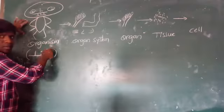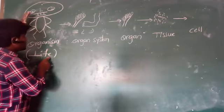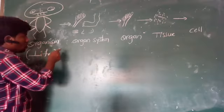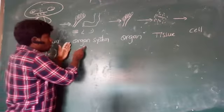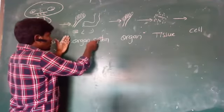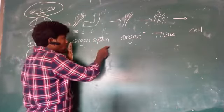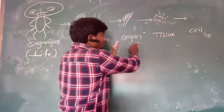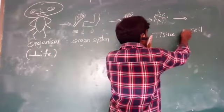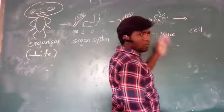The organism is a living thing. This organism is formed by a group of organ systems. Those organ systems are formed by organs, and each organ is formed by tissue. That tissue is formed by a group of cells. So the levels of organization go from cells to tissues to organs to organ systems to organism.